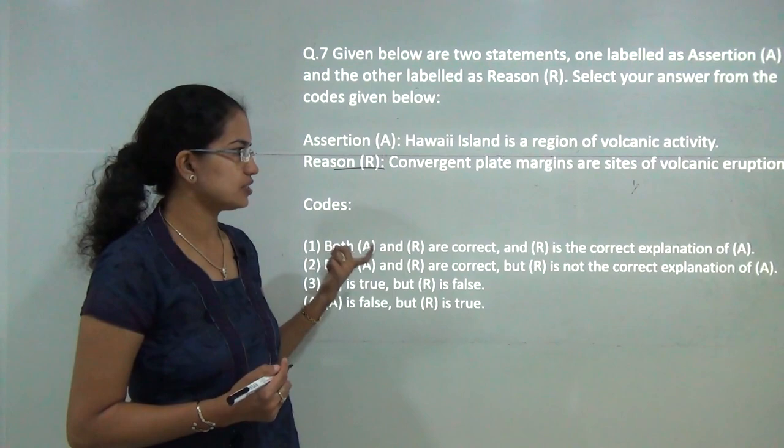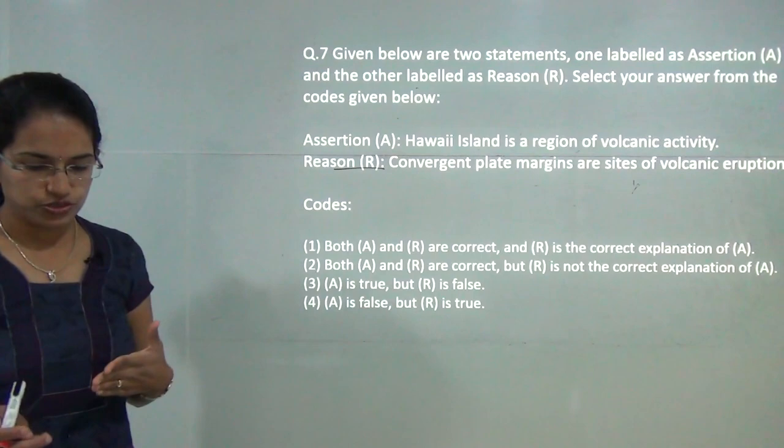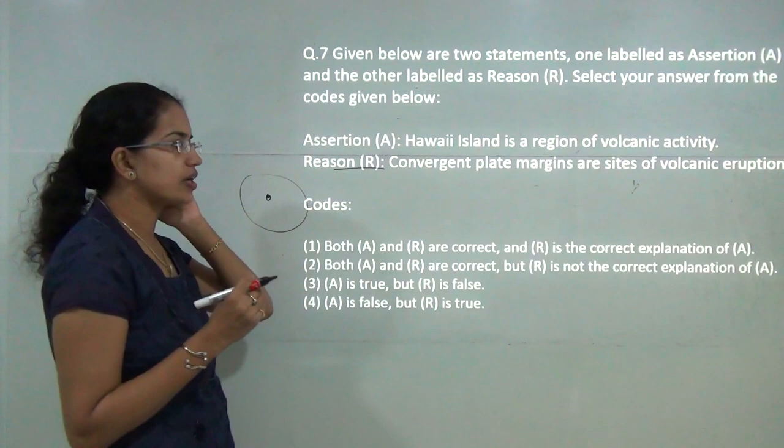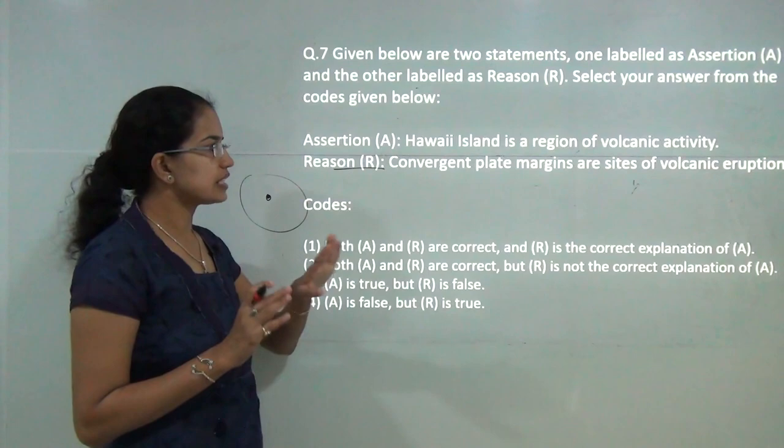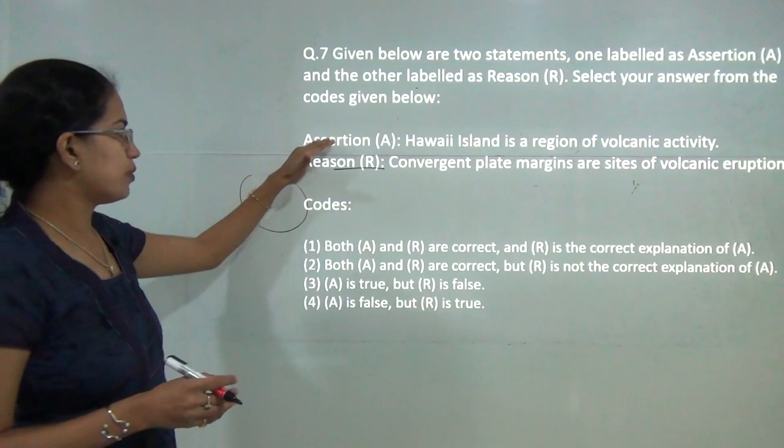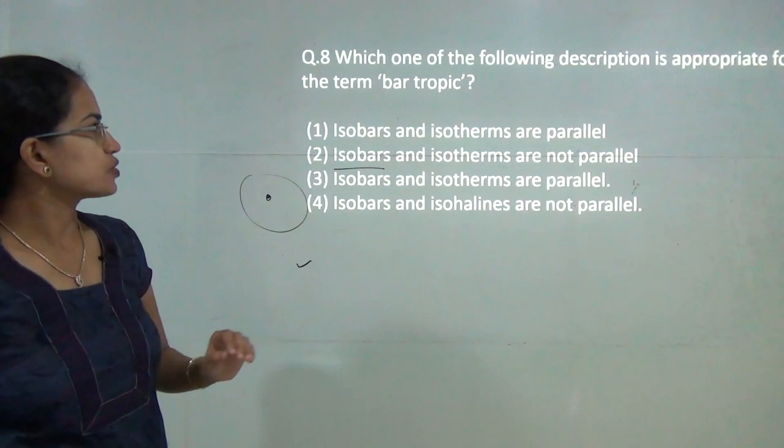Hawaiian island is a region of volcanic activity, that is true. Convergent plate margins are the site of volcanic activity, that is again true, but this is not an explanation for Hawaiian island because Hawaiian island lies in the center of the Pacific plate and it is an example of hot spot. Both the statements are independently correct but this does not explain the Hawaiian island volcanic activities. Both are correct but the reason is not a correct explanation. Two would be the correct answer here.